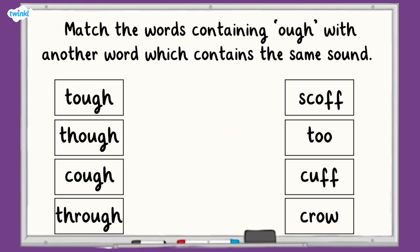How did you get on? The word tough has the same sound as cuff. They make the short UH sound with F. The word though has the same sound as crow. They make the long O sound and though has the letters GH silent.